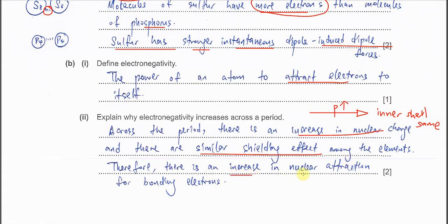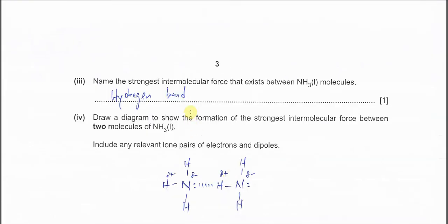Therefore, there is an increase in nuclear attraction, so the nucleus can attract the bonding electrons more strongly — which is what electronegativity measures. Part three: name the strongest intermolecular force between ammonia molecules. The intermolecular forces in the syllabus are id-id, pd-pd, and hydrogen bond. The strongest intermolecular force that exists between ammonia molecules is the hydrogen bond.